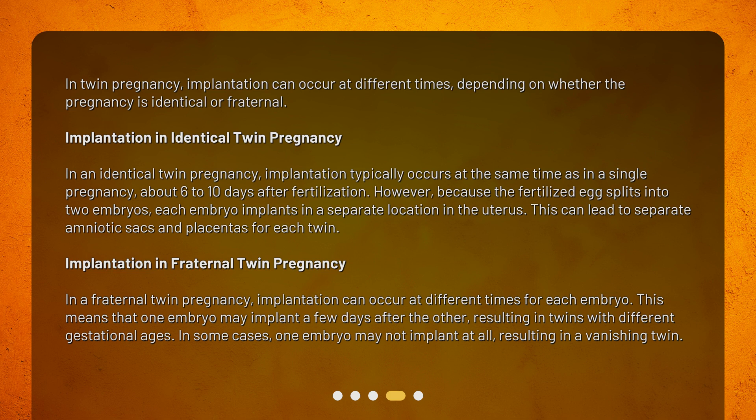Implantation in identical twin pregnancy: In an identical twin pregnancy, implantation typically occurs at the same time as in a single pregnancy, about 6 to 10 days after fertilization. However, because the fertilized egg splits into two embryos, each embryo implants in a separate location in the uterus. This can lead to separate amniotic sacs and placentas for each twin.